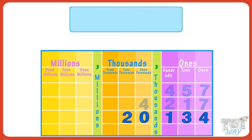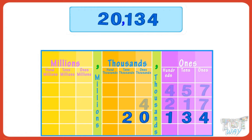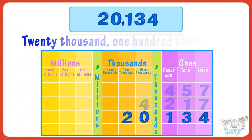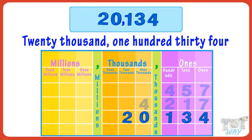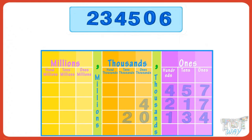Read numbers separately from all periods along with the period name. Two zero are in the thousands period, so read it as twenty thousands and place a comma after twenty. One, three, four are in the ones period — read them as one hundred and thirty-four. So we write the number as 20,134 and read it as twenty thousand one hundred thirty-four.